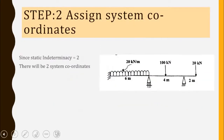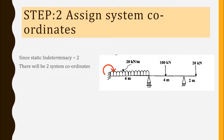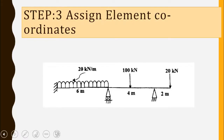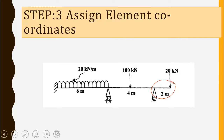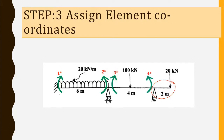Since static indeterminacy is 2, we assign two system coordinates, releasing the moment at A and the reaction at B. For element coordinates, note that this beam has an overhanging member which should not be counted. So we have only four element coordinates: one-star, two-star, three-star, and four-star.